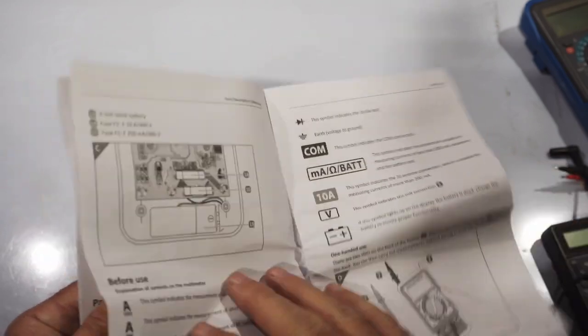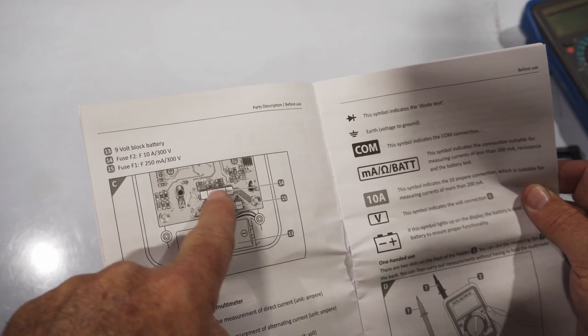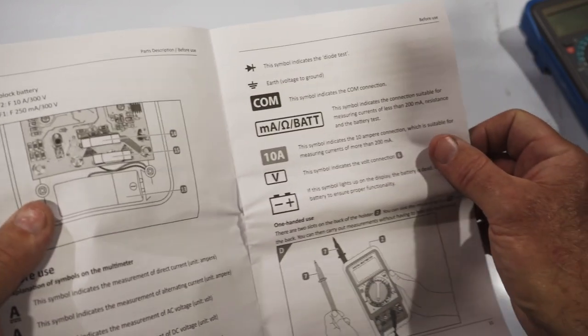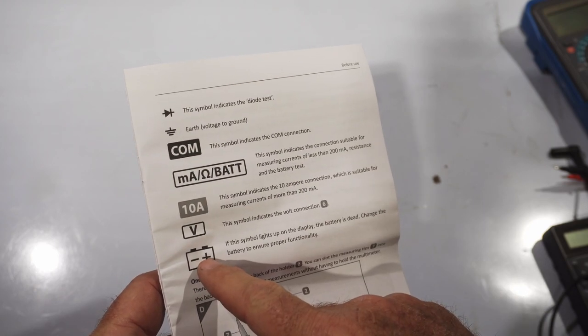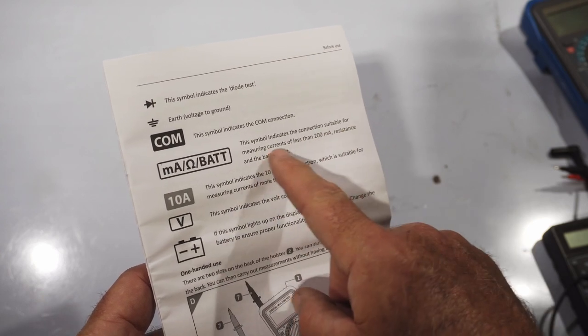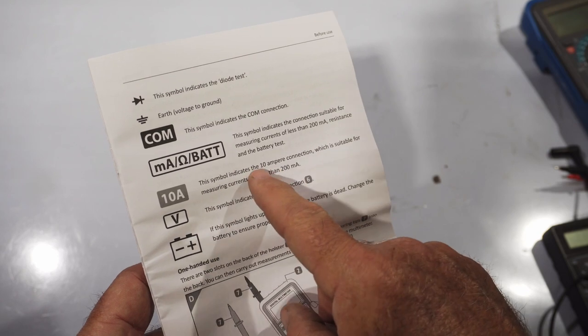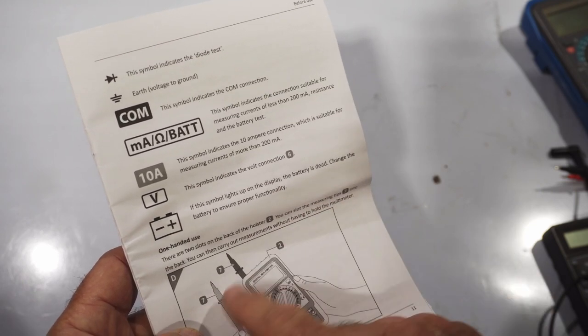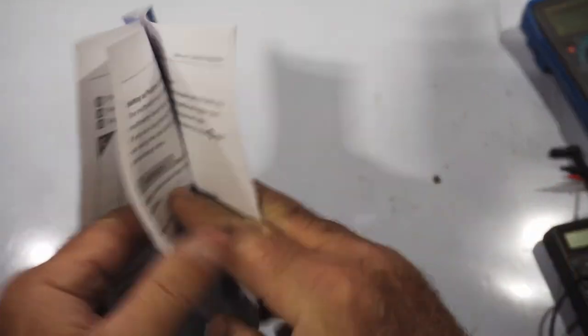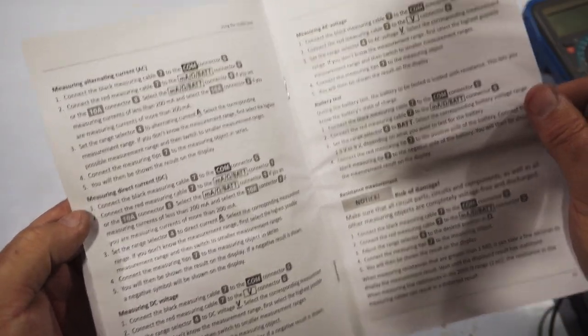So just having a look at the instruction book that comes with it is quite good. You can see here it talks about replacing those fuses that I just showed that are on the back, which is good that you can replace those. And then it gives you an indication here on how to wire up the probe for different settings. One is a communication setting. This one here is suitable for measuring currents of less than 200 milliamp resistance and the battery test for the internal battery. This one here is to indicate the 10 amp connection, which is suitable for measuring currents of more than 200 milliamp voltage connection. And if this symbol lights up, it means that the battery on the actual machine itself is on its way out. So those instructions are pretty good. I think it covers all the bases there.